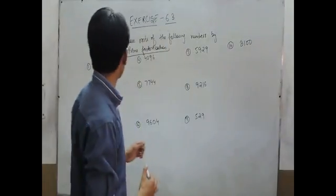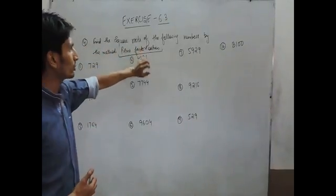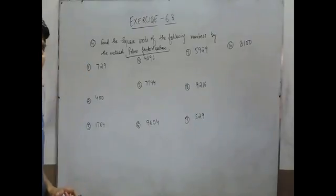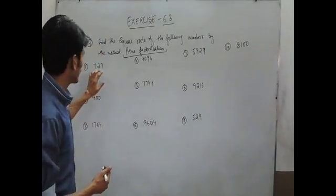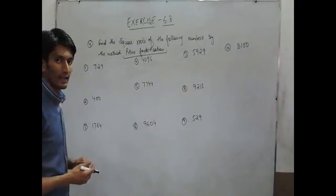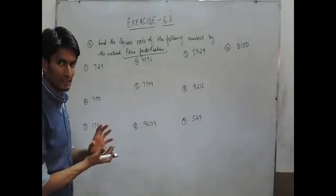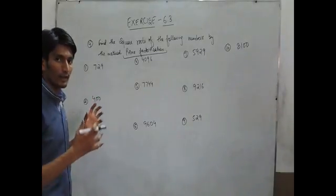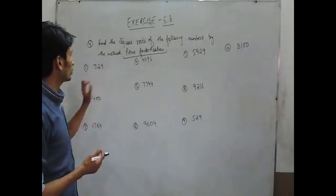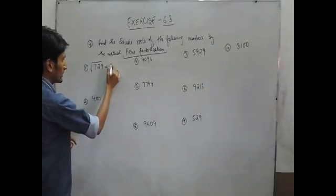Hello everyone. In this video we are going to solve question number 4. We have to find the square root of these numbers by prime factorization method. In the prime factorization method, first you find the prime factors of the number, then make pairs of two same prime factors, take one from each pair, and multiply them to get the square root of the desired number.